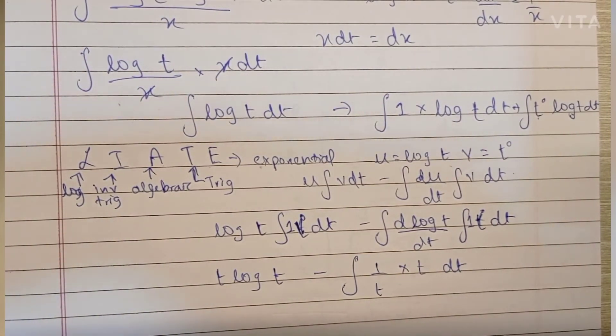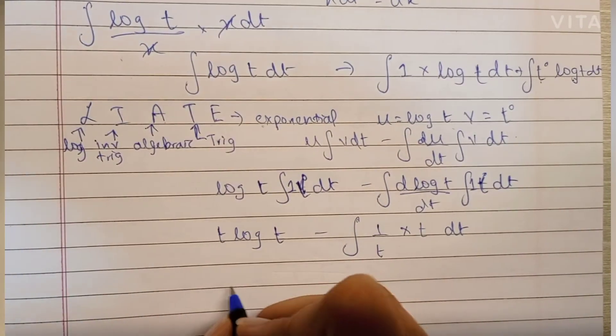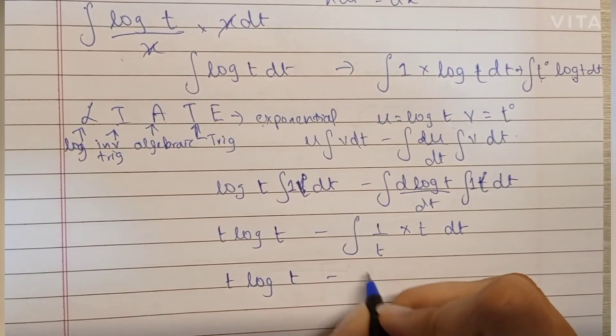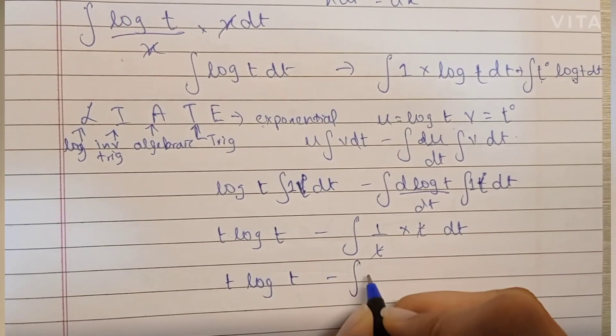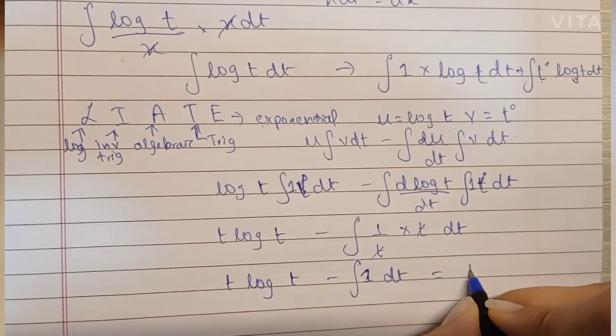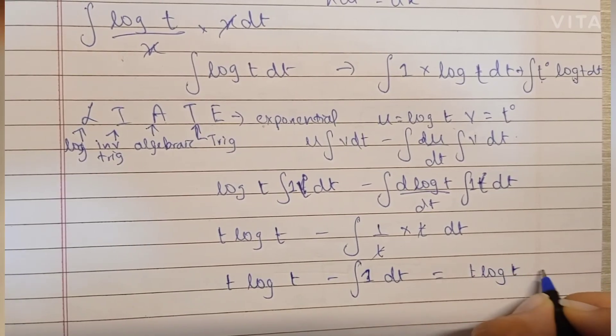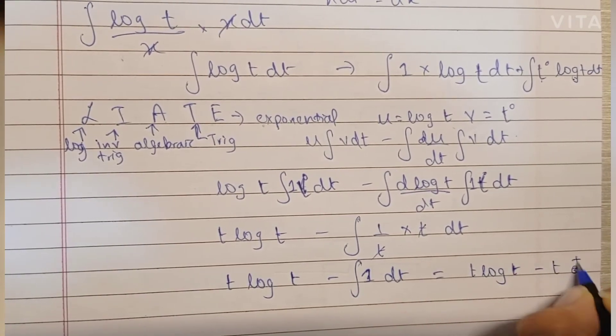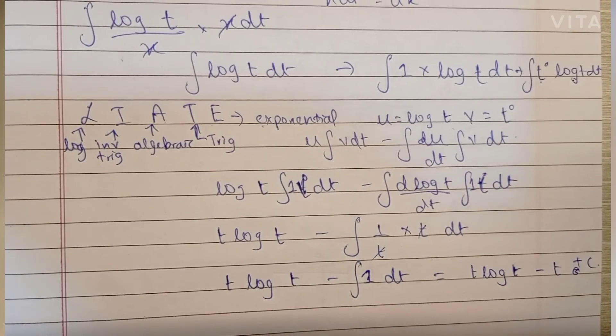So we're left with the integral of one again. This becomes t log t minus t plus C, and t was log x. Now we're going to substitute log x.